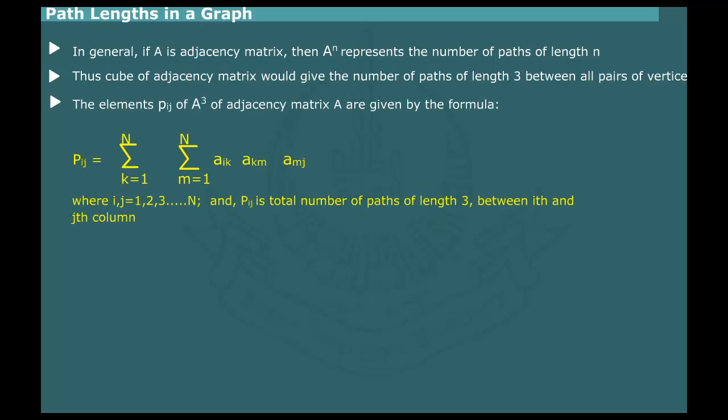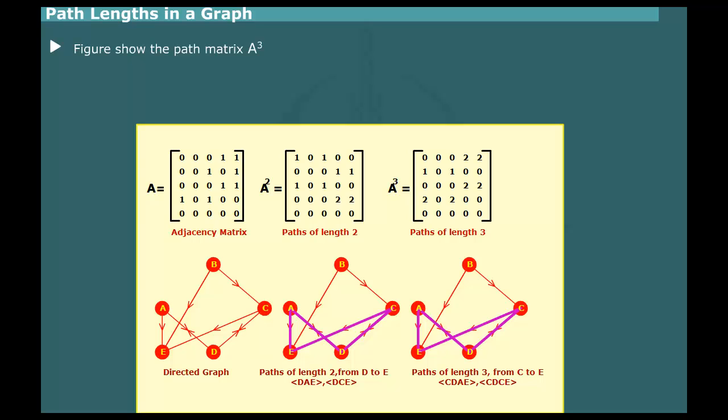The elements of the cube of adjacent matrix A are given by the formula, where Pij refers to an element in the i-th row and j-th column of matrix A cube. In other words, Pij is the total number of paths of length 3 between the i-th and j-th vertex of a graph. This figure shows the graph matrix A raised to path 3. The matrix indicates that these paths are C-D-A-E and C-D-C-E. The first is a simple path since no vertex is repeated along path. The other is non-simple because vertex C is repeated.